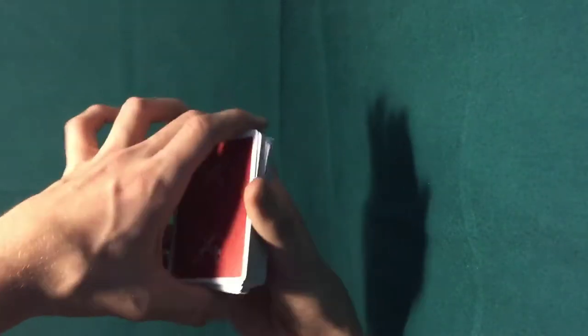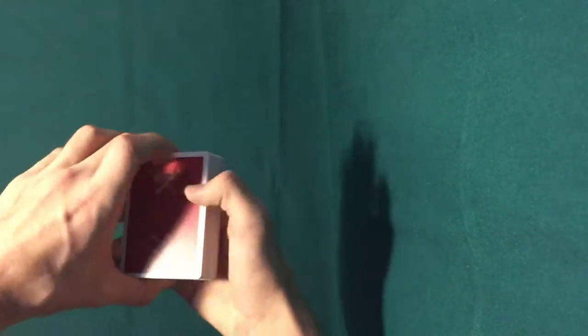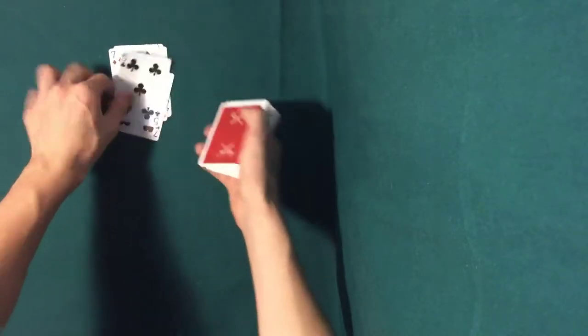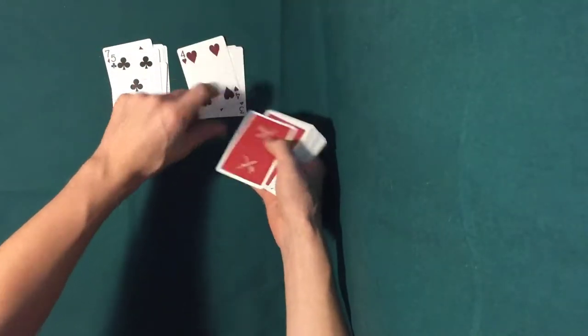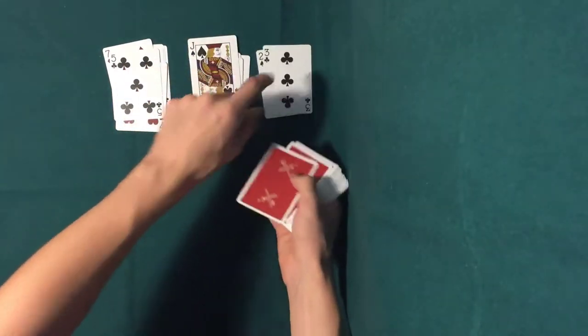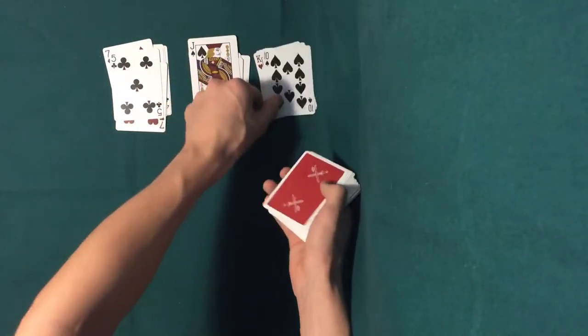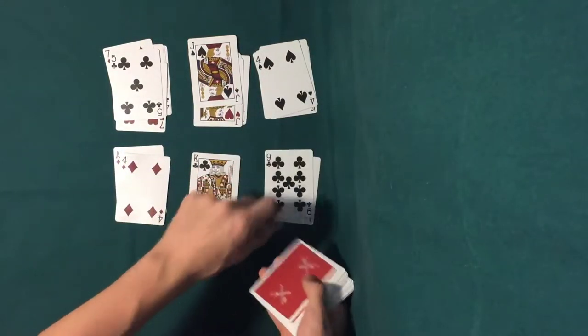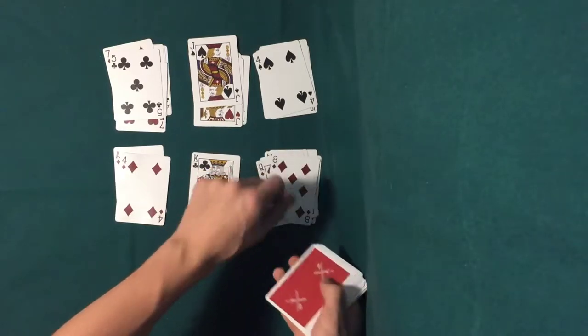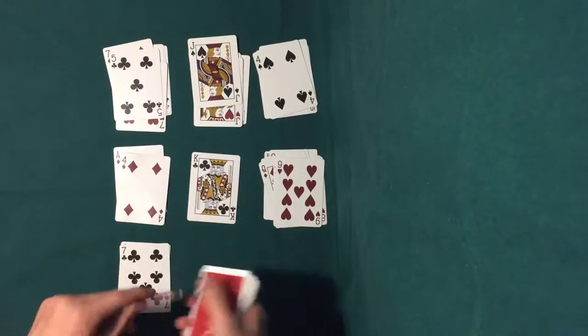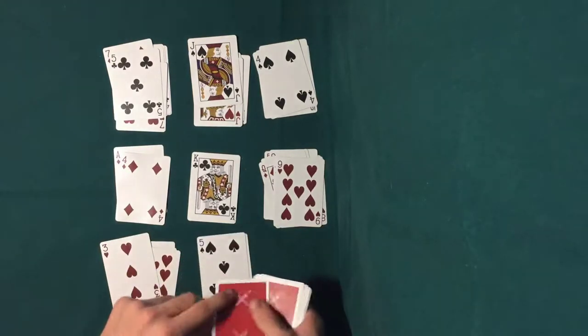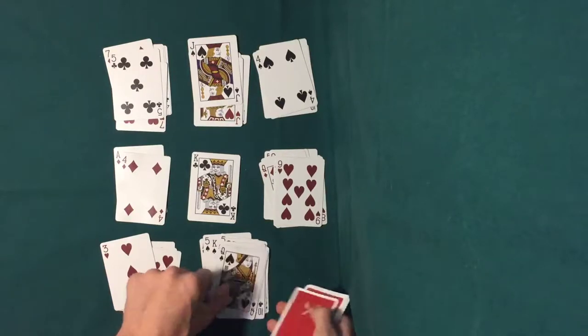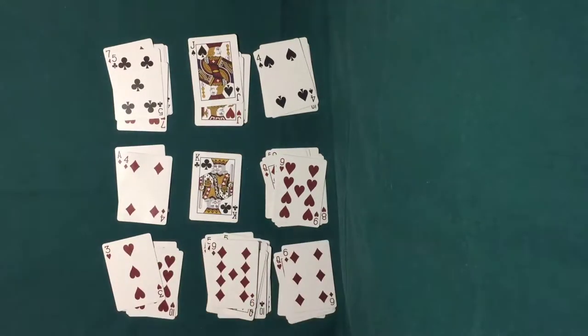Now we're just going to cut the deck about halfway. Normally I would have a spectator choose this, and this is not just because there's not a spectator here with me. It's actually because a magician never gets to choose anything, and I want to have at least one trick where the magician actually gets to choose something.